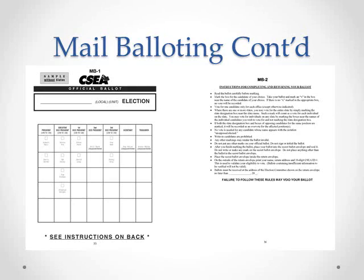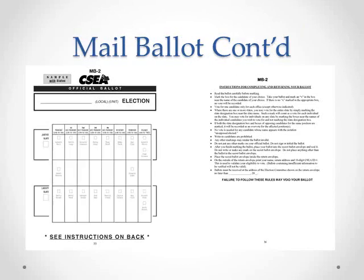Forms MB1 and MB2 show a draft ballot for a mail method of election where there are no slates running for office. The next samples are for mail balloting with slates. As you can see, in addition to the names of the candidates on the slates, there's an extra box with the slate name off to the left. A mark in that box is the same as a vote for each member of the slate.